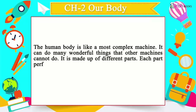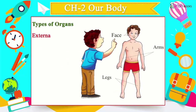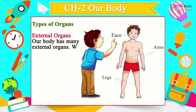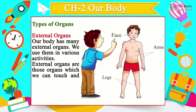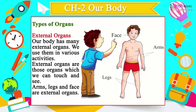It is made up of different parts. Each part performs a special function. Our body has many external organs. We use them in various activities. External organs are those organs which we can touch and see. Arms, legs, and face are external organs.